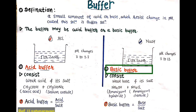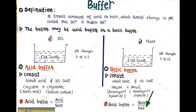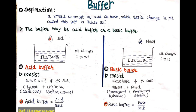Same situation in basic buffer, which consists of a weak base and its salt combined to make a solution called basic buffer. Example is ammonium hydroxide buffer. Here, ammonium hydroxide NH4OH performs as the weak base and ammonium chloride NH4Cl performs as its salt. In a basic buffer solution, the base and its salt combine to prepare the basic buffer solution.